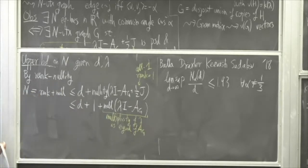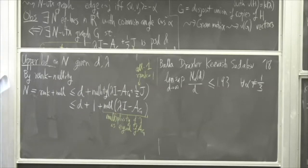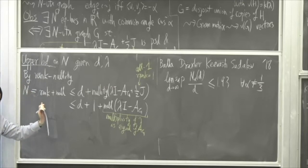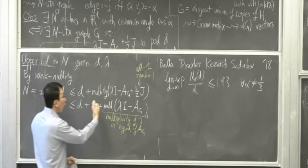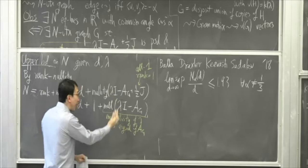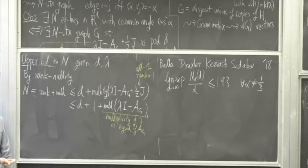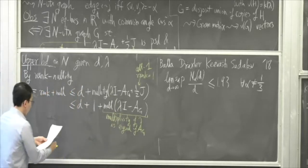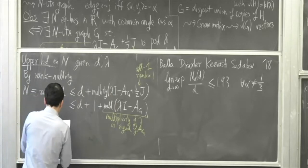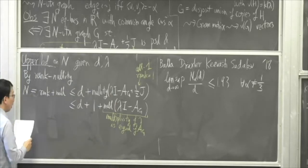So you see the connection between these two problems: on one hand finding the maximum number of equiangular lines, and on the other hand trying to upper bound eigenvalue multiplicities in graphs. The rest of this talk is about understanding what can go wrong — can this multiplicity be really large? If so, we're in trouble. We want to make sure the second eigenvalue multiplicity is small.